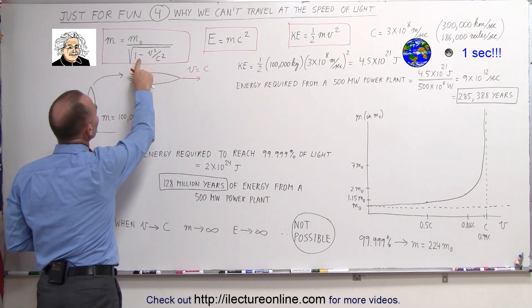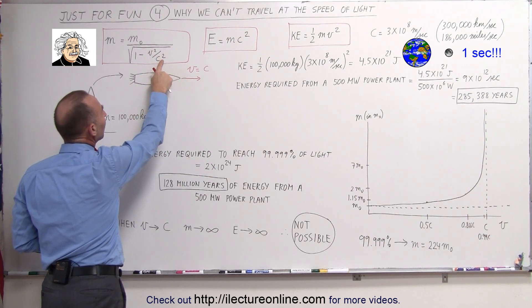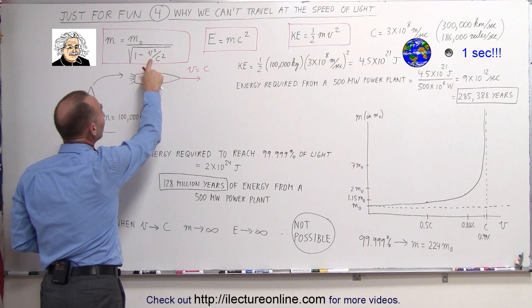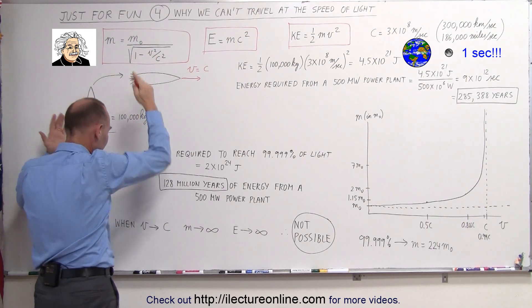Notice this equation. When V becomes equal to C, V squared divided by C squared is equal to 1, 1 minus 1 is 0, and m sub-naught, which is the original mass divided by 0, becomes infinite.